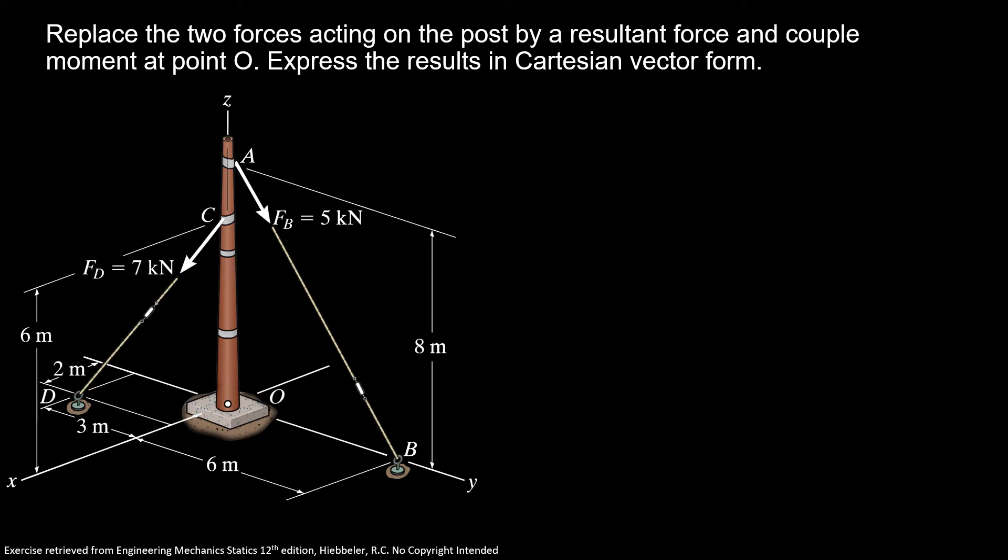So first we have to find our unit vector AB. I'm going to start finding my vector AB that is 0i plus 6j minus 8k. I know that my magnitude of vector AB is the square root of 6 squared plus minus 8 squared. So the magnitude of the vector AB equals 10.